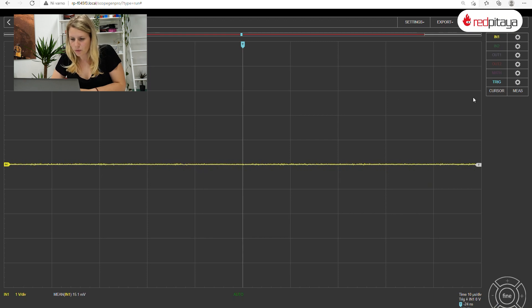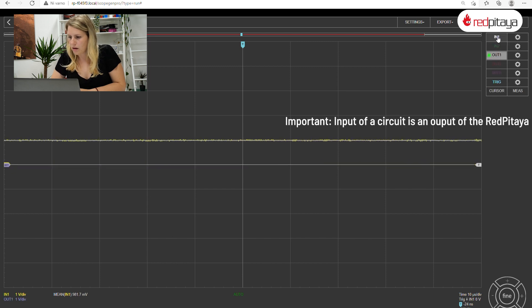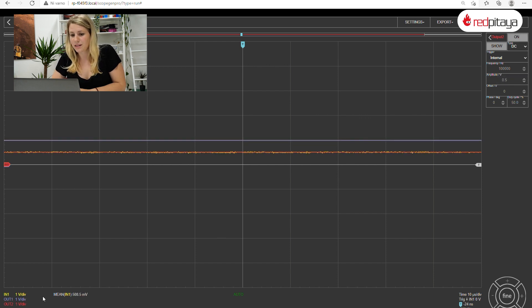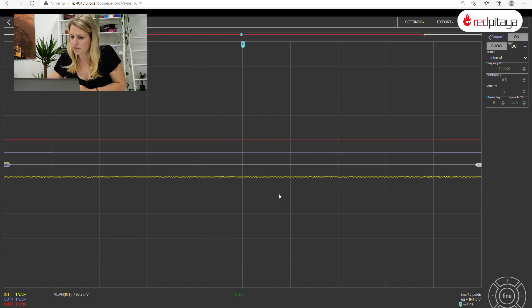Let's start by playing with DC voltages for a bit. 1 volt on input 1 minus 0.5 volts on input 2 equals 0.5 volts. Indeed. How about 0.5 volts minus 1 volt? Minus 0.5 volts. Correct.